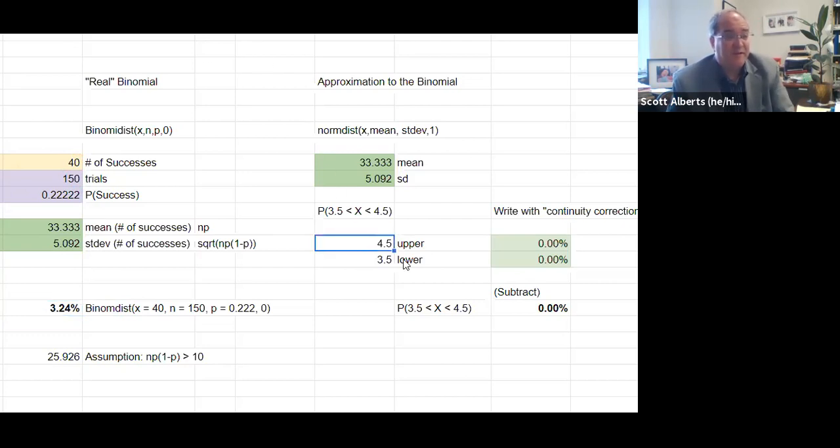The other thing we're going to have to do here is instead of thinking of 35 to 45, we're going to think about 40 and a half down to 39 and a half. All the math kind of takes care of itself. With mean 33 and standard deviation five, we calculate those two probabilities with norm dist, subtract them, and we get 3.33%. In this case, NP(1-P) is greater than 10, so we expect the probability to be pretty close. It's off by 0.1%, which is a pretty good approximation.